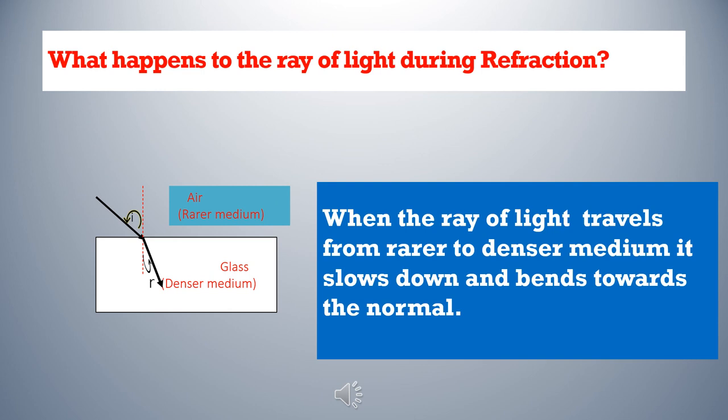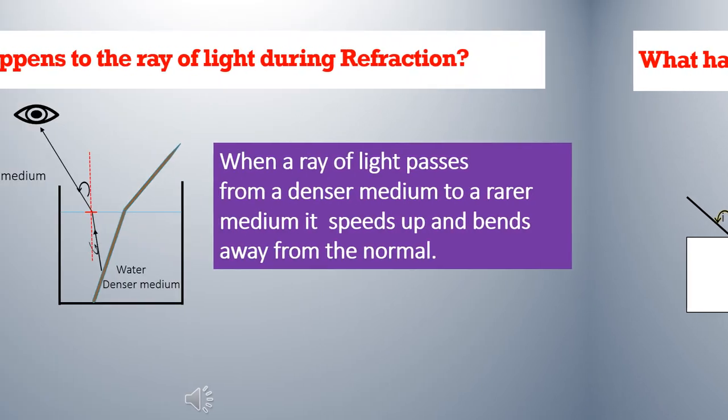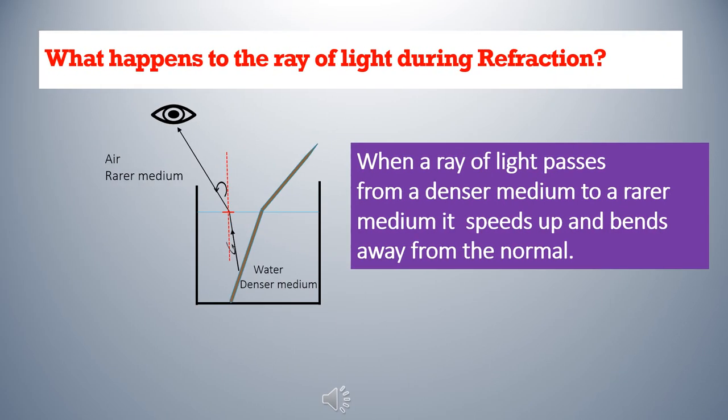What happens to the ray of light during refraction? When the ray of light travels from a rarer to a denser medium – for example from air to glass or from air to water – it slows down and bends towards the normal. When the ray of light passes from a denser medium to a rarer medium – for example from water to air or from glass to air – its speed increases and it bends away from the normal.